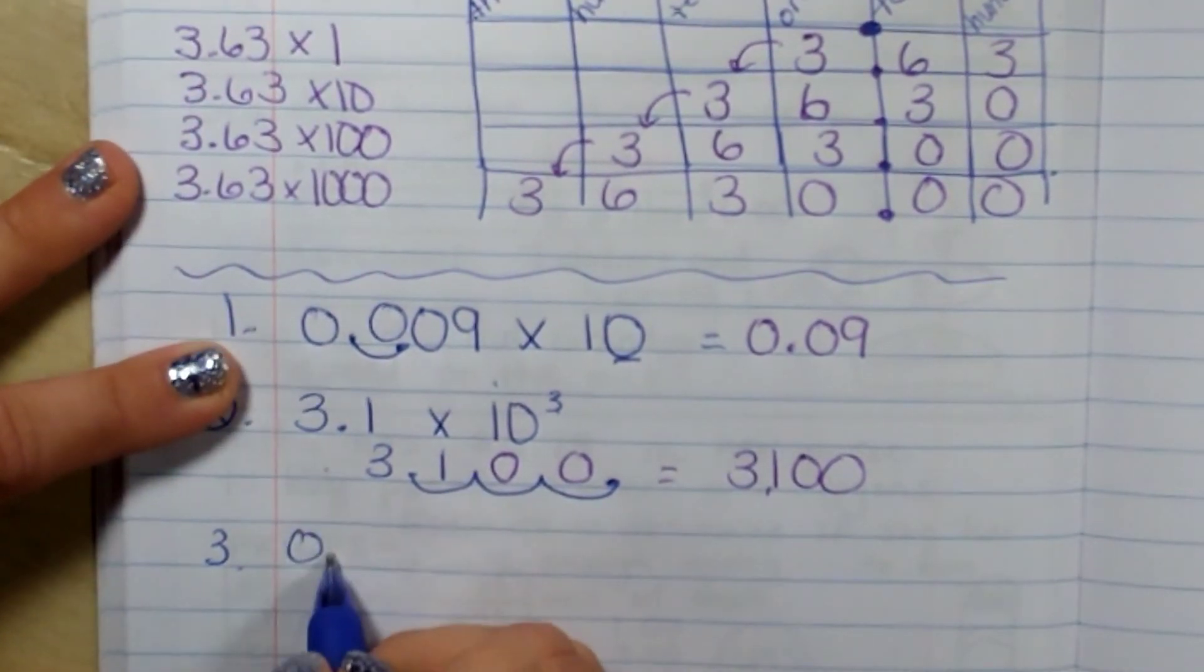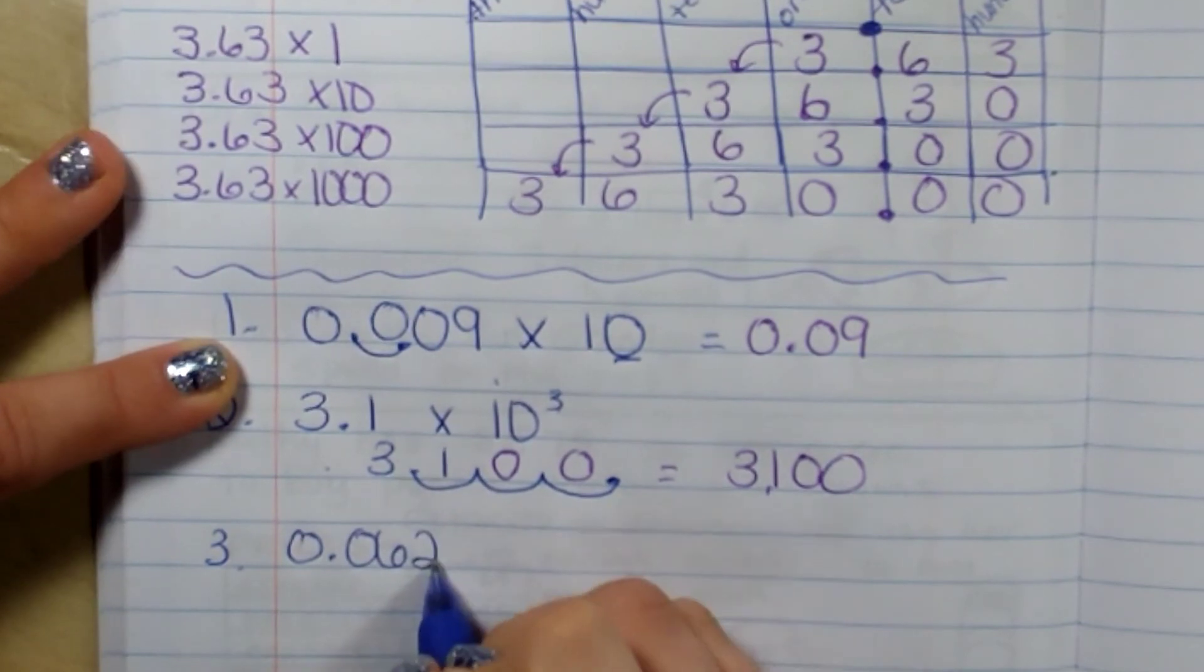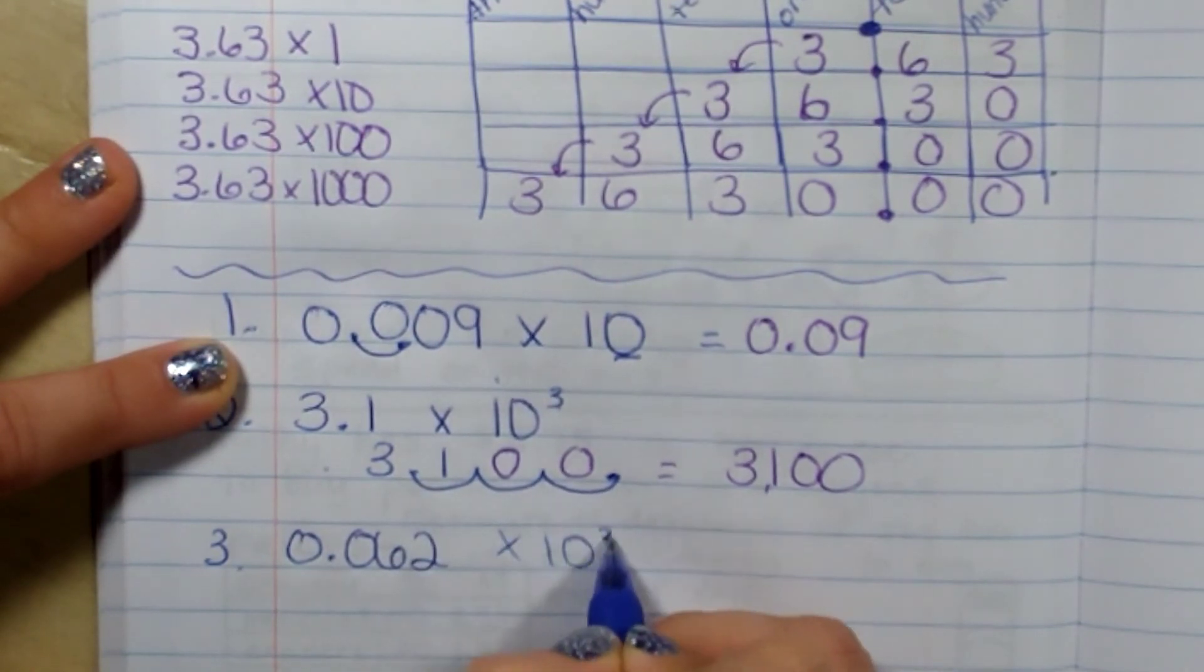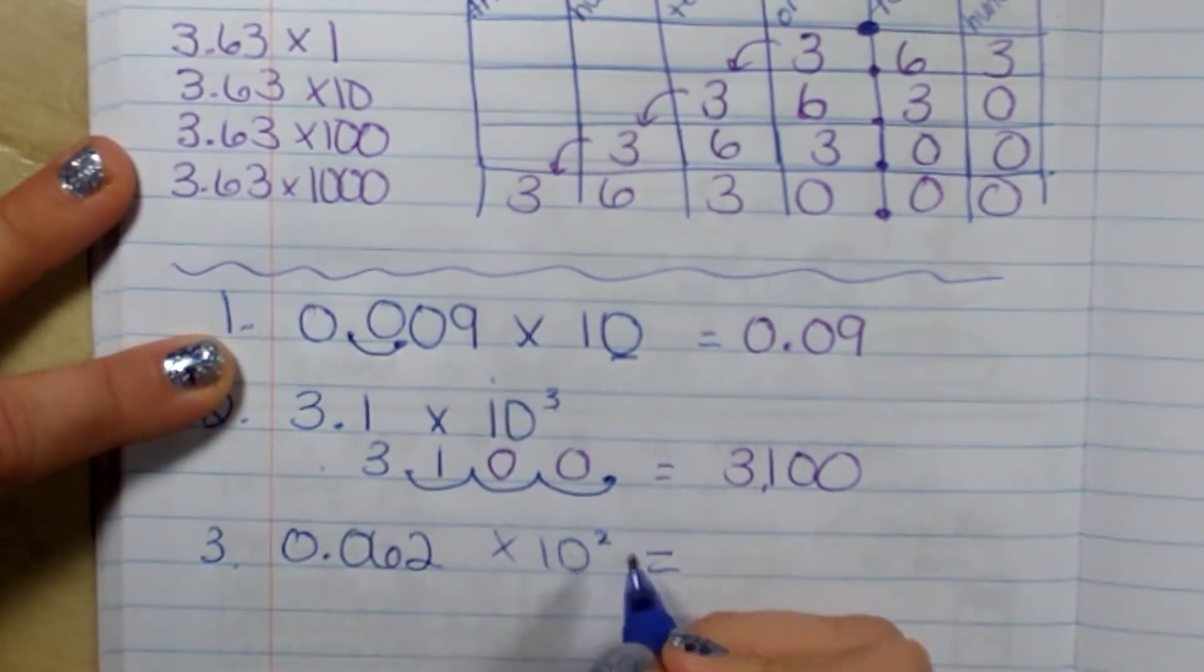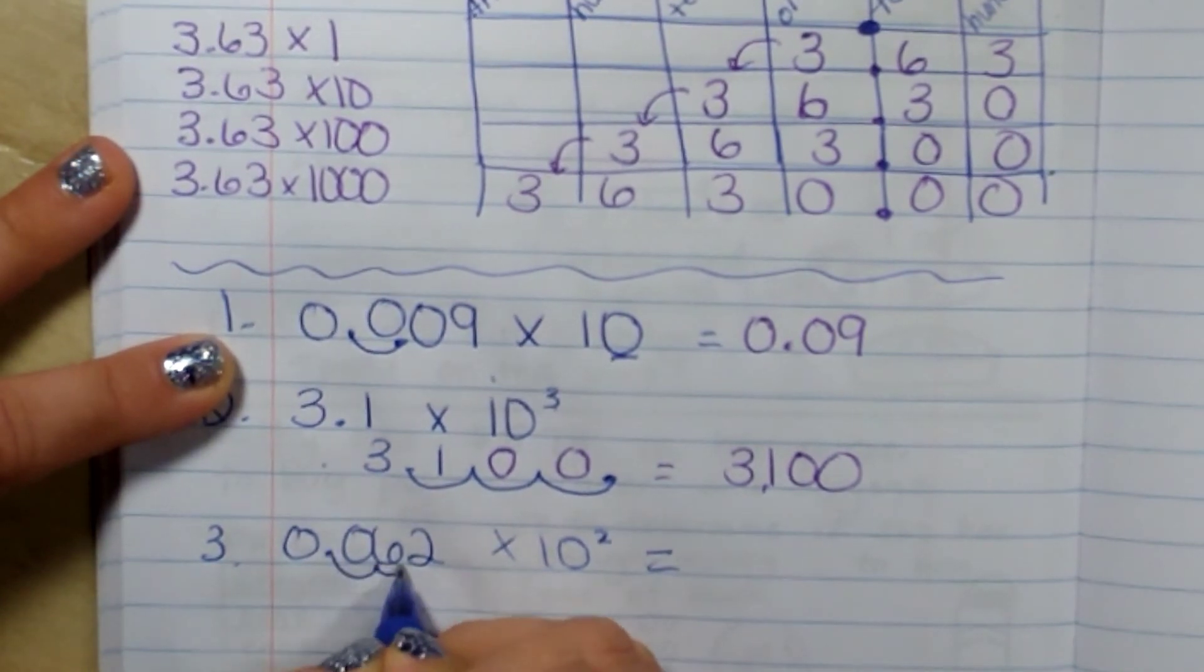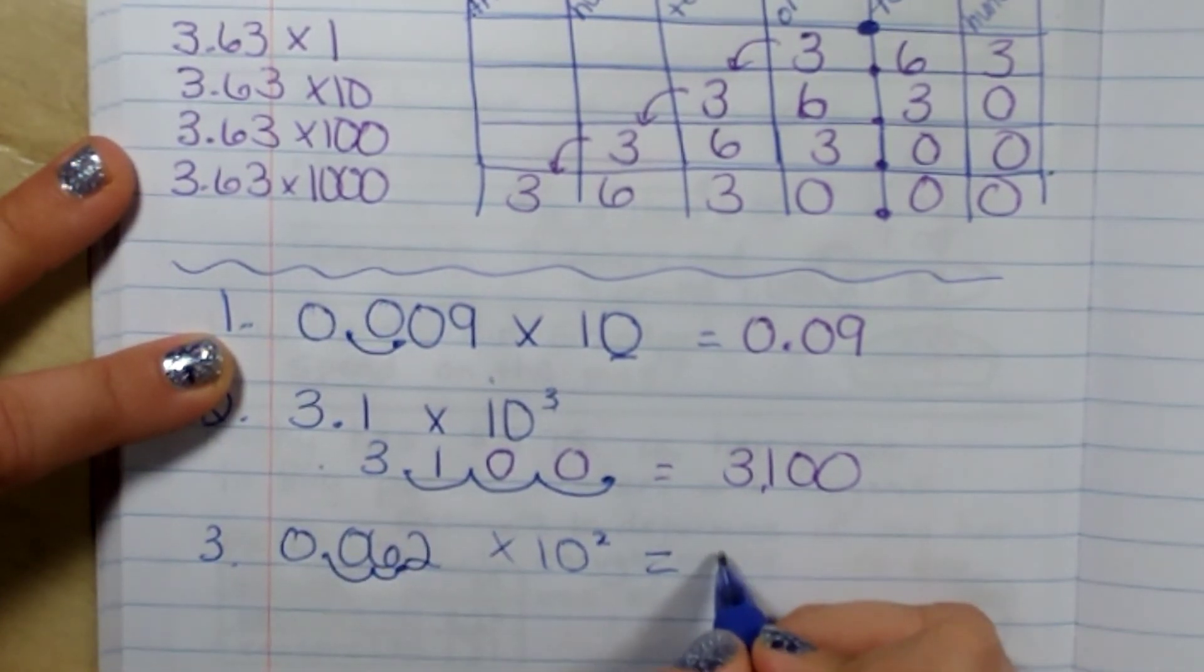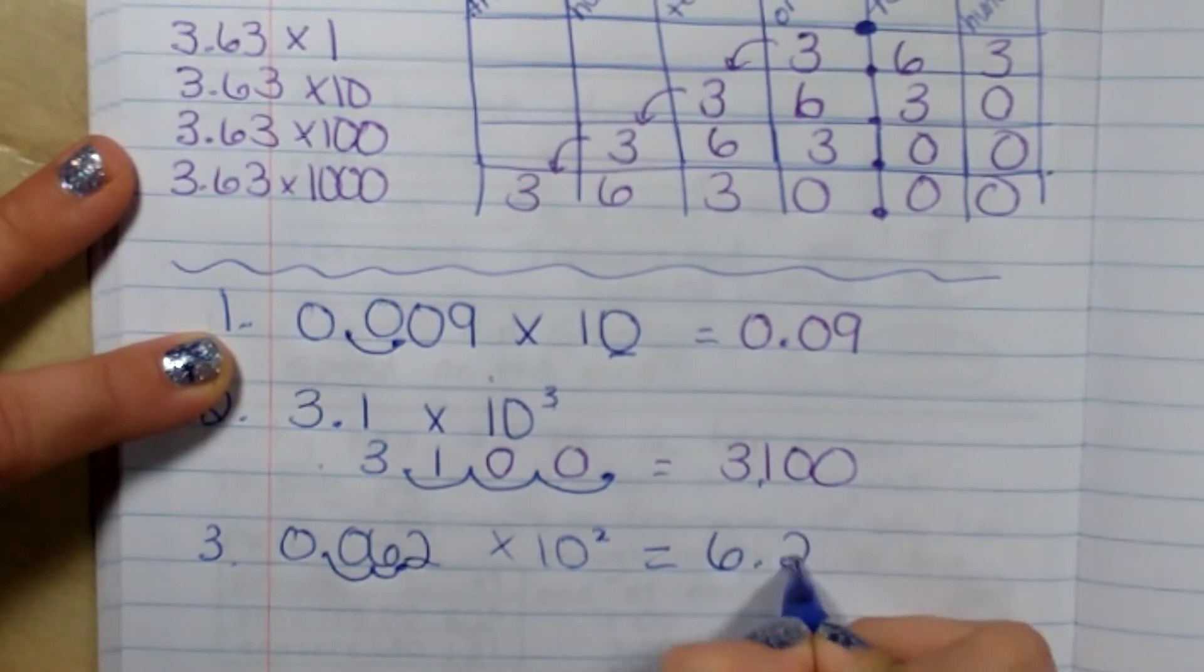If I had sixty-two thousandths times ten to the second, which is one hundred, I would move it two places. One, two. It would be six point two.